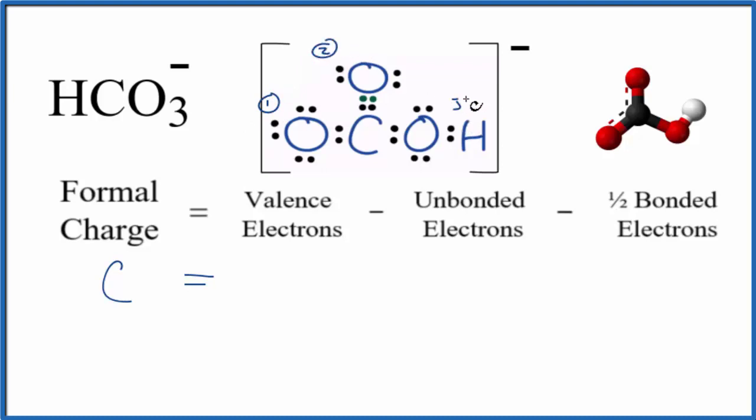So let's call this one, two, and three. We'll calculate formal charges for each oxygen and for the carbon. Carbon is in group 14, sometimes called 4A, so it has four valence electrons. For unbonded electrons, all of carbon's electrons are involved in chemical bonds, so we don't have any unbonded.